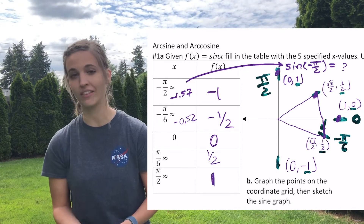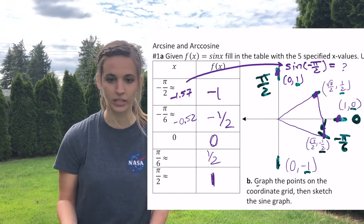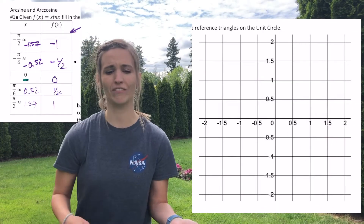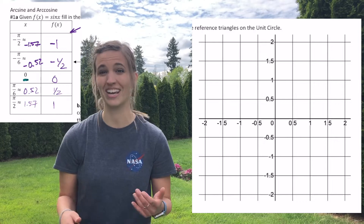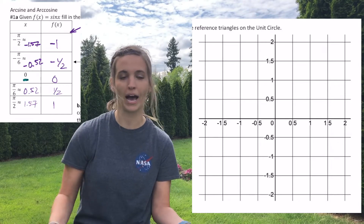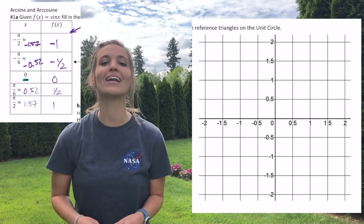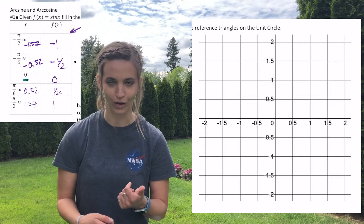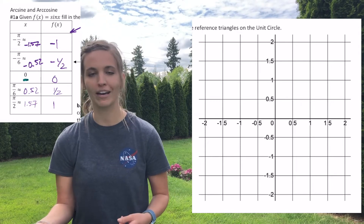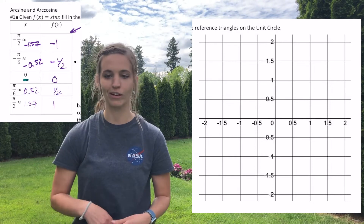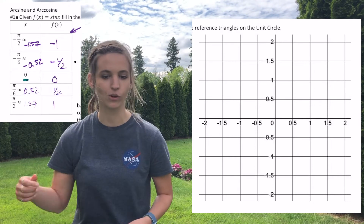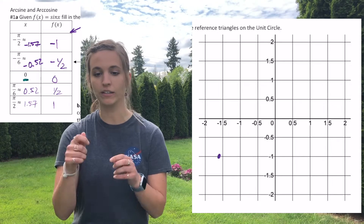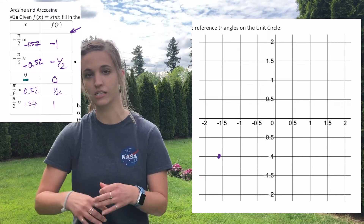Now I want to go ahead and plot these coordinates. Since my coordinate grid goes from negative 2 to 2 in the x direction instead of negative 2 pi to 2 pi, we're going to want to approximate negative pi over 2, etc. So negative pi over 2 is about negative 1.57, and we can do that for the rest of these. So first point: negative 1.57 comma negative 1. Let me get that plotted. You go ahead, plot the rest.